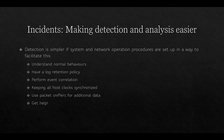Detection is simpler if system and network operation procedures are set up to facilitate it. This means an organization should understand normal behaviors, have logs and a log retention policy, and perform event correlation — taking events raised by various detection systems, combining them, and deciding whether they point to an incident. Keeping all host clocks synchronized is also important, since analysis is much harder if systems have incorrect clocks, making it difficult to establish a reliable sequence of events from files, processes, or other logs.